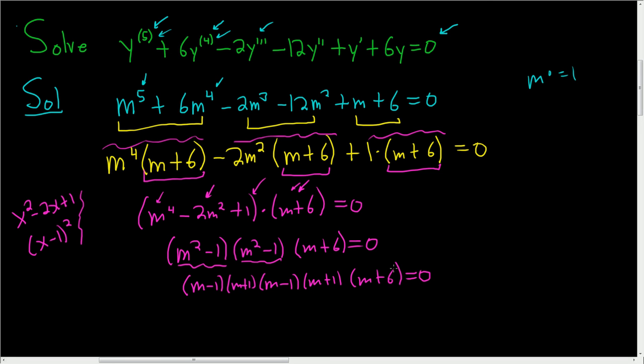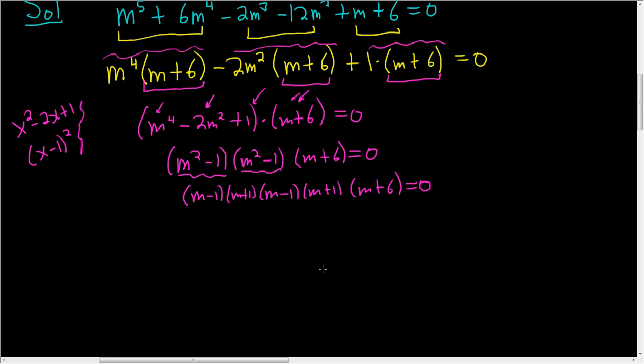It's really, really important to now group everything together, because we're really interested in the multiplicity of the roots. So we have m minus 1, m minus 1, so that's going to be m minus 1 squared. And we have m plus 1, m plus 1, so that'll be m plus 1 squared. And then here we have m plus 6, and this whole thing is equal to 0.